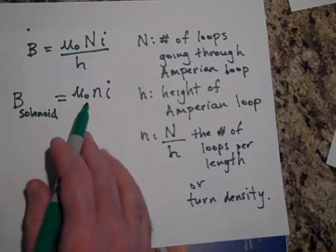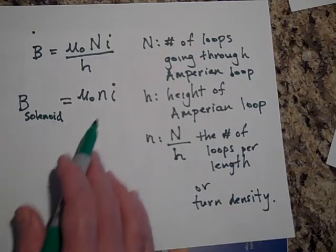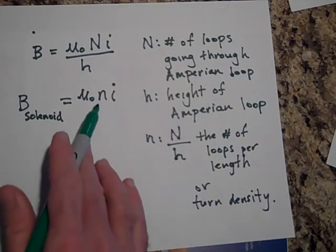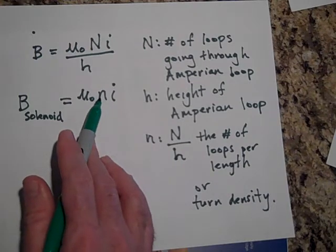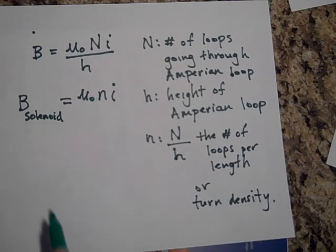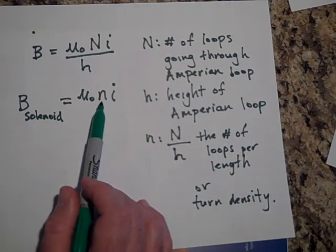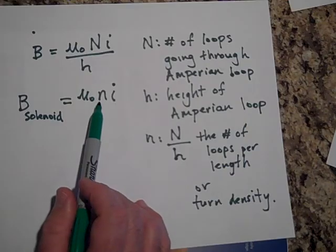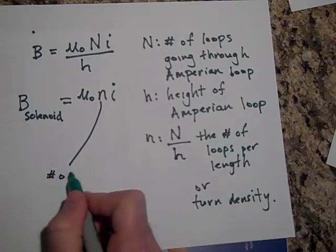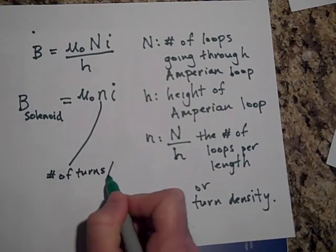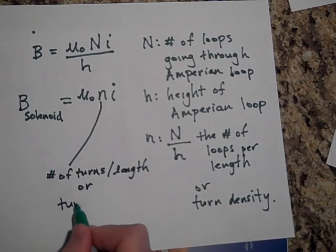Okay, so the magnetic field inside of a solenoid then is equal to mu naught times N times i. It's funny. But remember that N is not just the number of loops in the solenoid. It's the turn density. So it's the number of turns. Sometimes the loops are called turns. It's the number of turns per length or the turn density. Okay, so this N is the number of turns per length or it's sometimes called the turn density.